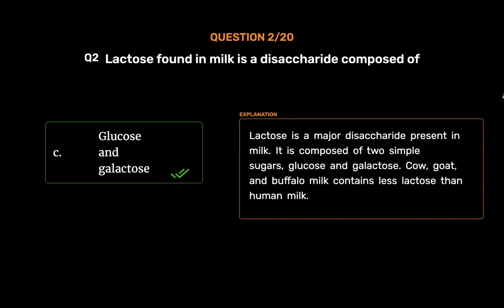Lactose is a major disaccharide present in milk. It is composed of two simple sugars, glucose and galactose. Cow, goat, and buffalo milk contains less lactose than human milk.